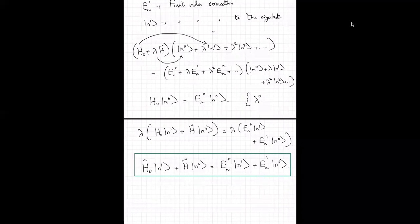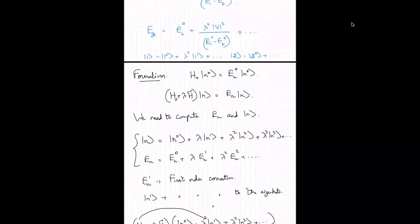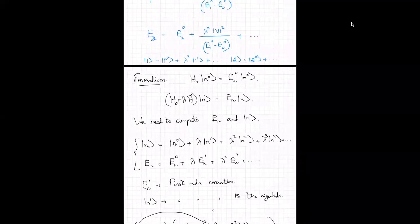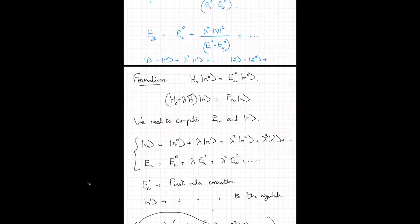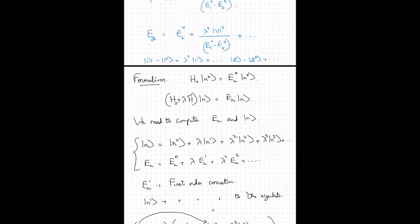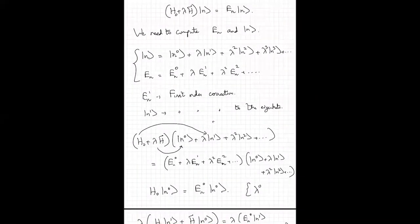We are dealing with problems in which it is in general difficult to get the exact solution. So we are dealing with what is called approximation methods in quantum mechanics. One of the approximation methods in quantum mechanics that we are dealing with right now is time-independent perturbation theory. Time-independent perturbation theory is predicated on the fact that I can separate the Hamiltonian into an unperturbed part and a small perturbation, which I have called lambda times H-tilde.